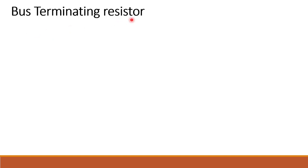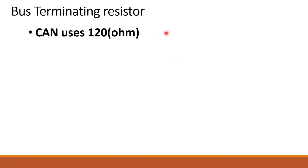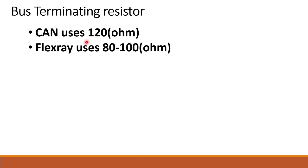Next, bus termination resistance. As discussed in the previous slide, each node has a termination resistor. CAN uses a 120 ohm resistor, while FlexRay uses an 820 ohm resistor at every bus termination point.